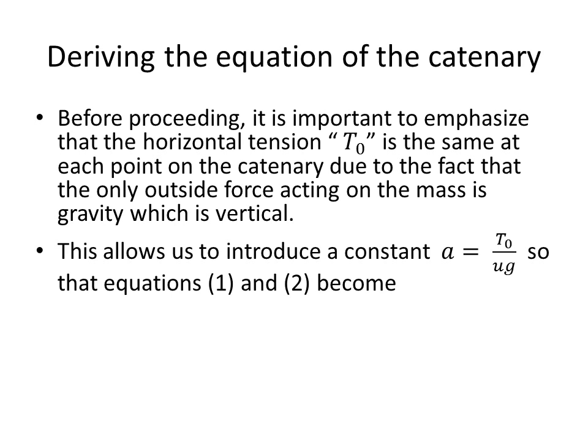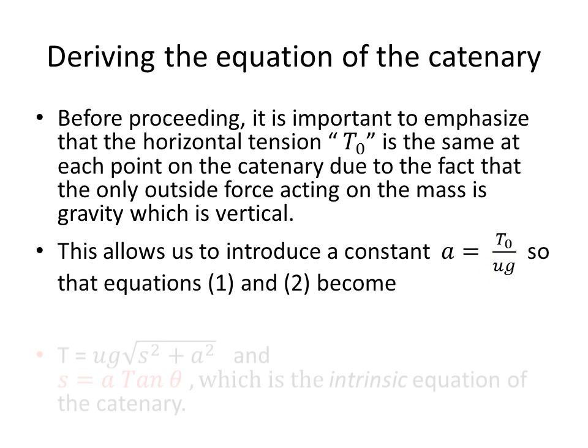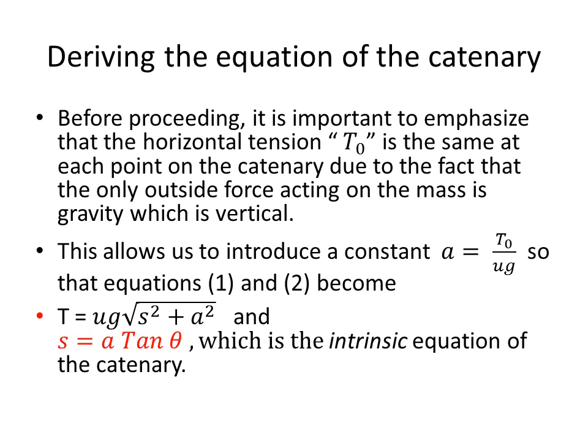This will allow us to introduce a constant. We're going to call it A, and it is equal to this horizontal tension force, T knot, divided by the mass per unit length times the acceleration due to gravity. So that equations one and two become tangential vector T is equal to the quantity U times G multiplied times the square root of S squared plus A squared from the Pythagorean relationship. And the all-important S equals A times the tangent of theta, our intrinsic equation of the catenary.